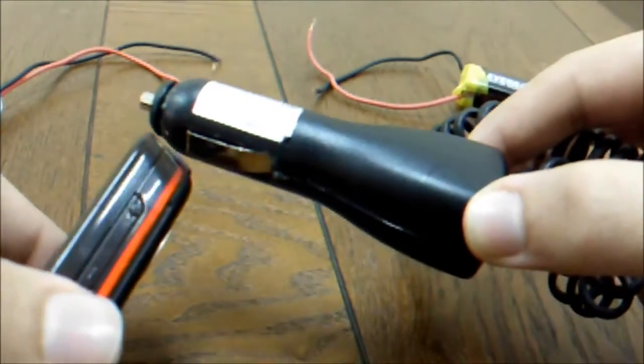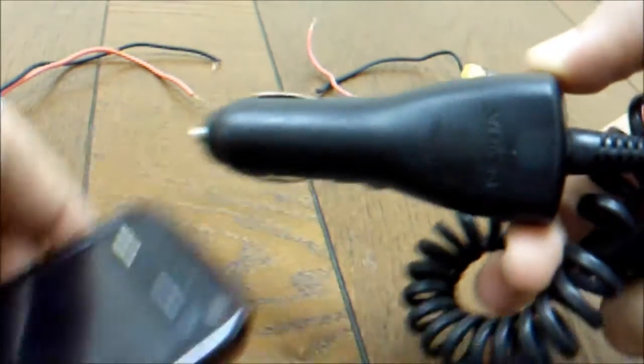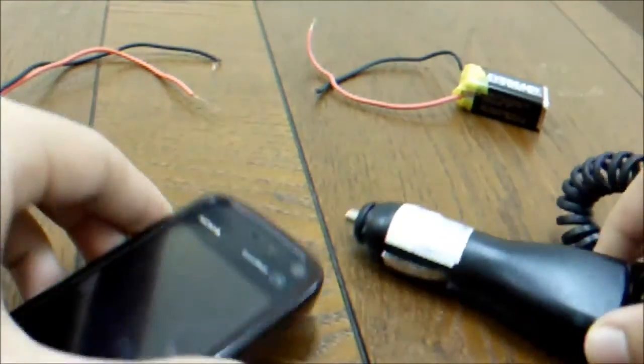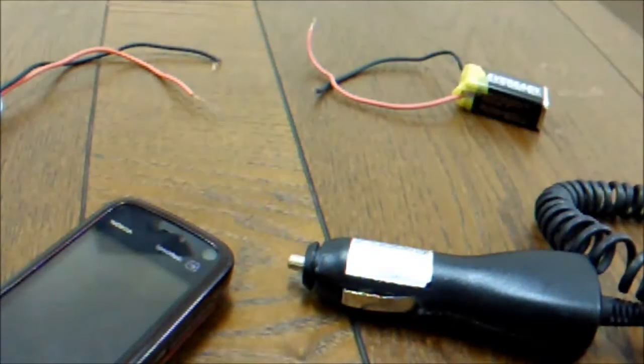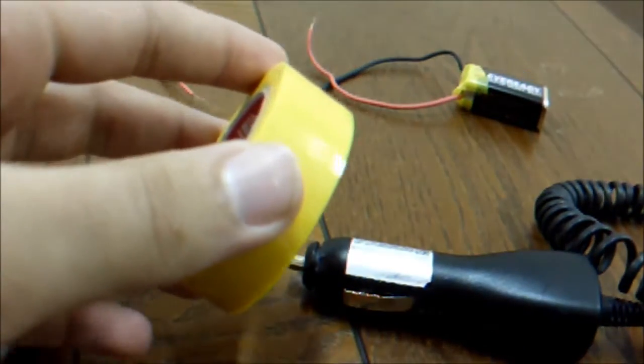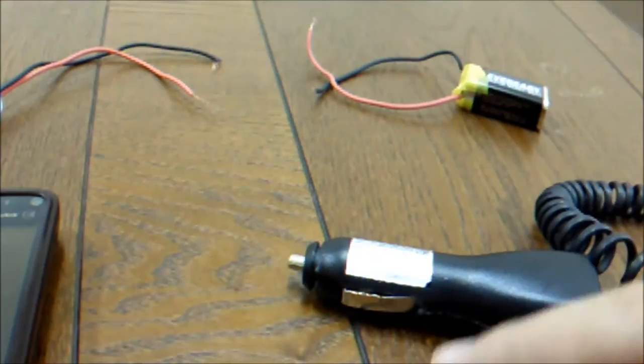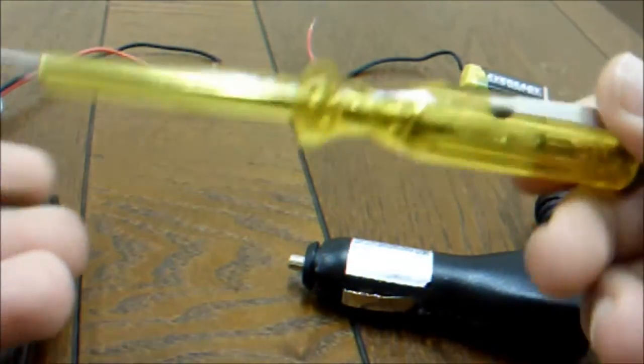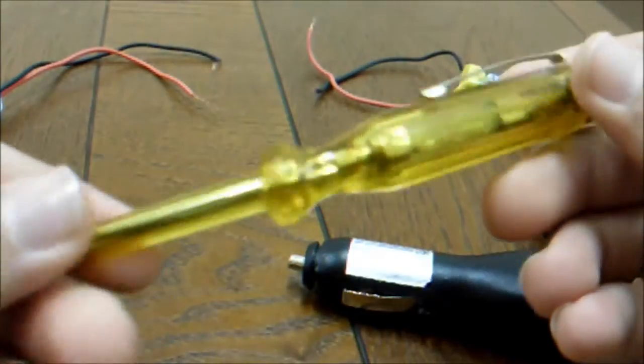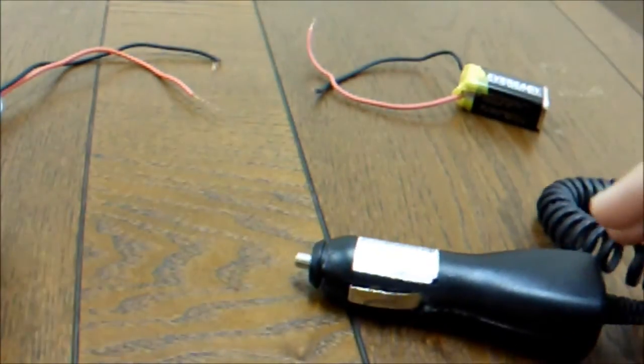A car charger - this is the main important thing in this project, a car charger for your mobile. This is a Nokia car charger. And your mobile, scissors, electric tape, and a screwdriver. So let's get started.